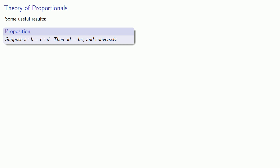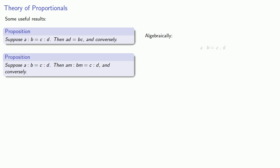Another proposition: if a is to b as c is to d, then am is to bm as c is to d, and conversely. Again, we can view this algebraically. Our proportionality gives us a over b equals c over d.